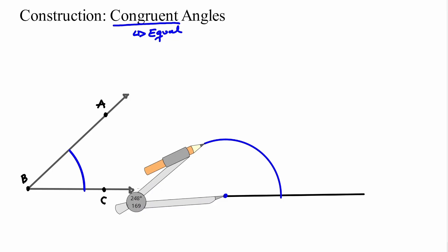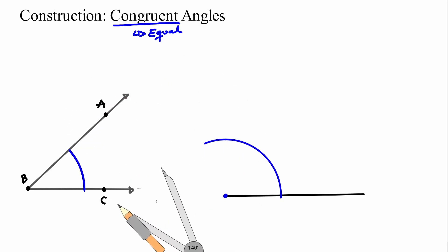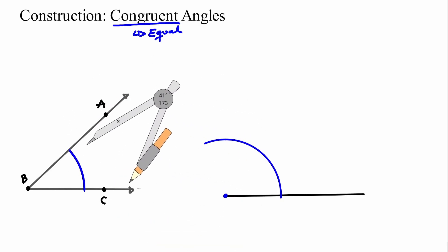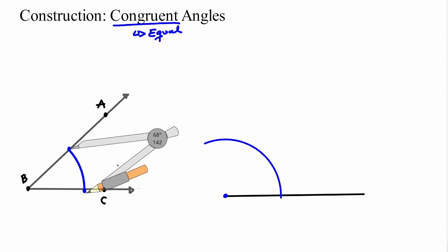The last step: I'm going to go back to my given angle and measure the opening of my arc. Notice that my arc starts right here and ends right here. I'm going to get my compass, put the metal leg on one of the points, and measure the length of this arc. I'm starting it on one section of the arc and ending it on the other section. I want to give this same length to the angle that I'm creating on the right-hand side.